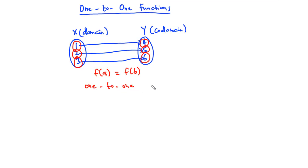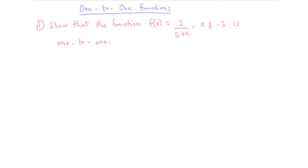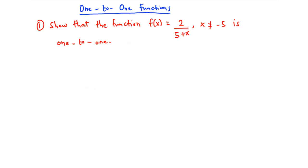Now let's solve some examples. Example one: show that the function f(x) = 2/(5 + x), where x is not equal to negative five, is one-to-one.